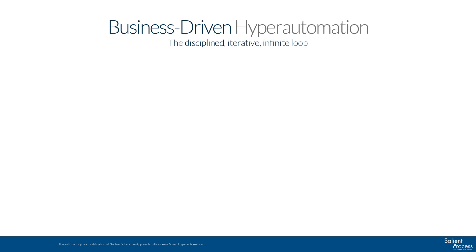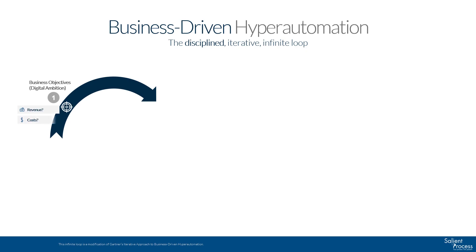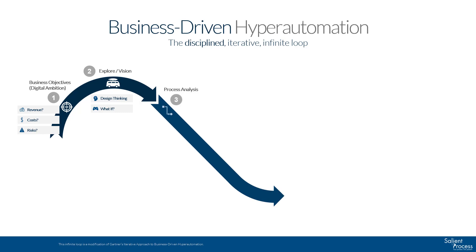Business-driven hyperautomation starts with defining your business objectives or your digital ambition — where do you want to go? You then explore and figure out what the vision is to get to your digital ambition. Once you have your vision, you can hone in on the processes you'll need to change and do the necessary process analysis. Since automation should be applied wherever it makes sense, you'll want to apply some sort of automation alignment framework to determine the best fit of automation with the various types of work being done.